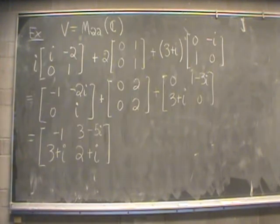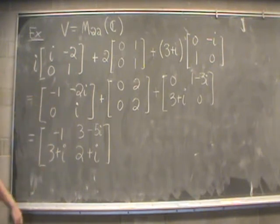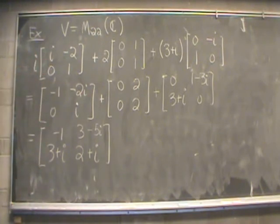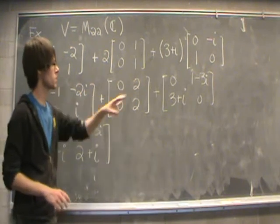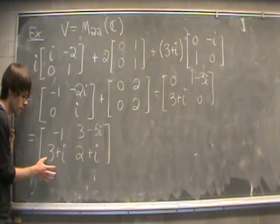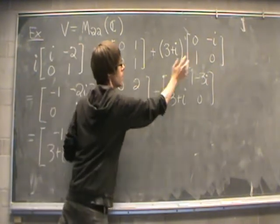Here's an example of a complex linear combination. We take our vector space to be 2×2 matrices with complex entries and do the following scalar multiplication: the first matrix multiplied by i, the second by 2, and the third by (3+i). When we do the scalar multiplication we obtain three matrices, and summing all three gives a final matrix. We say that final matrix is a linear combination of those three matrices.